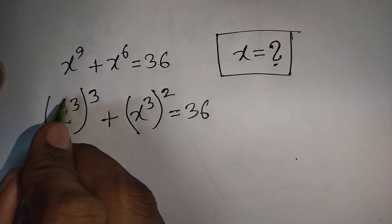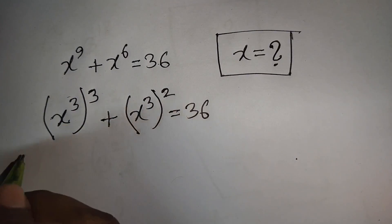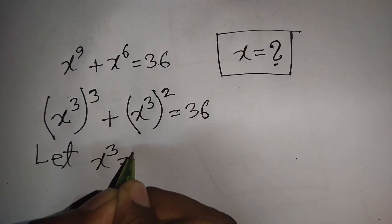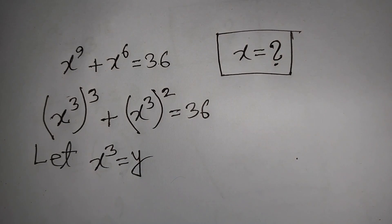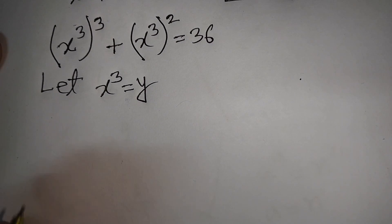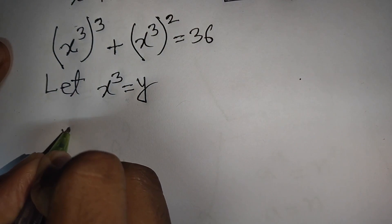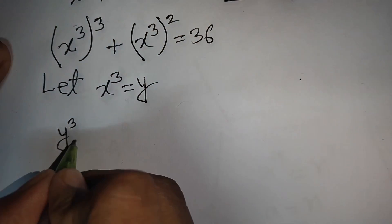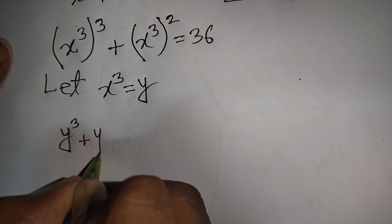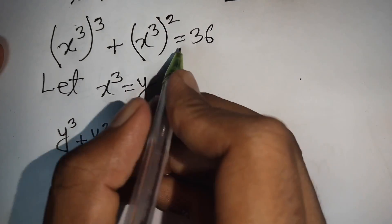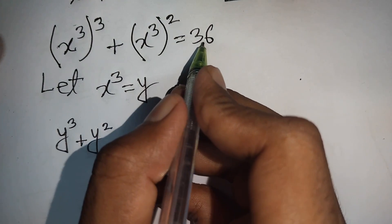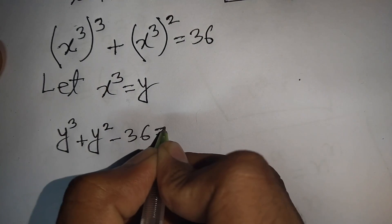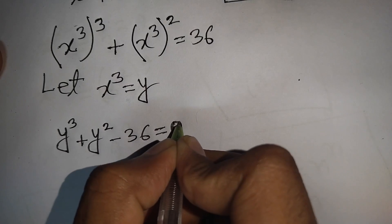Now x³ appears in both terms, so let y = x³ as a substitution. Our equation becomes y³ + y² = 36, and moving 36 to the left side gives y³ + y² - 36 = 0.